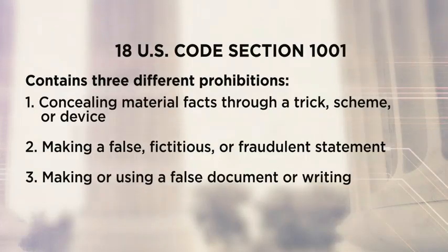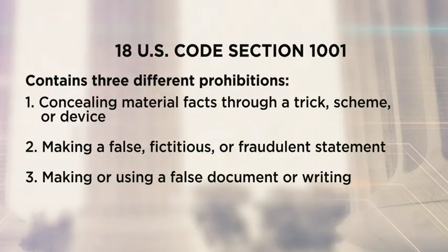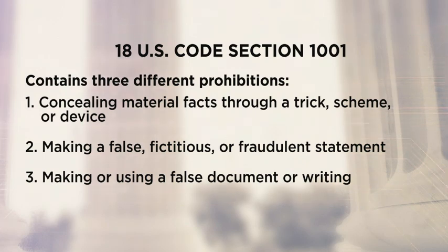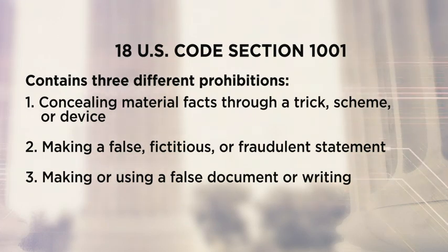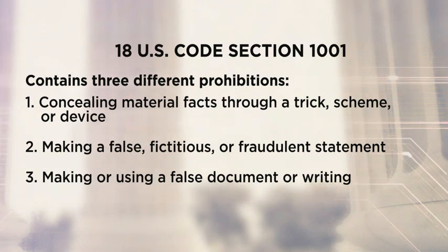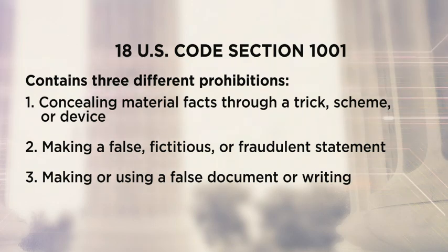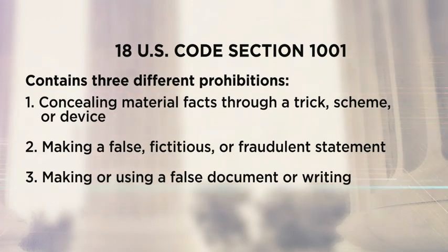There are three different prongs of Section 1001 and three different ways to violate it. Prongs 2 and 3 prohibit false, fictitious, or fraudulent statements, or using writings or documents that contain such statements. But the first prong is slightly different — it prohibits concealing material facts through a trick, scheme, or device, even in the absence of outright lies.